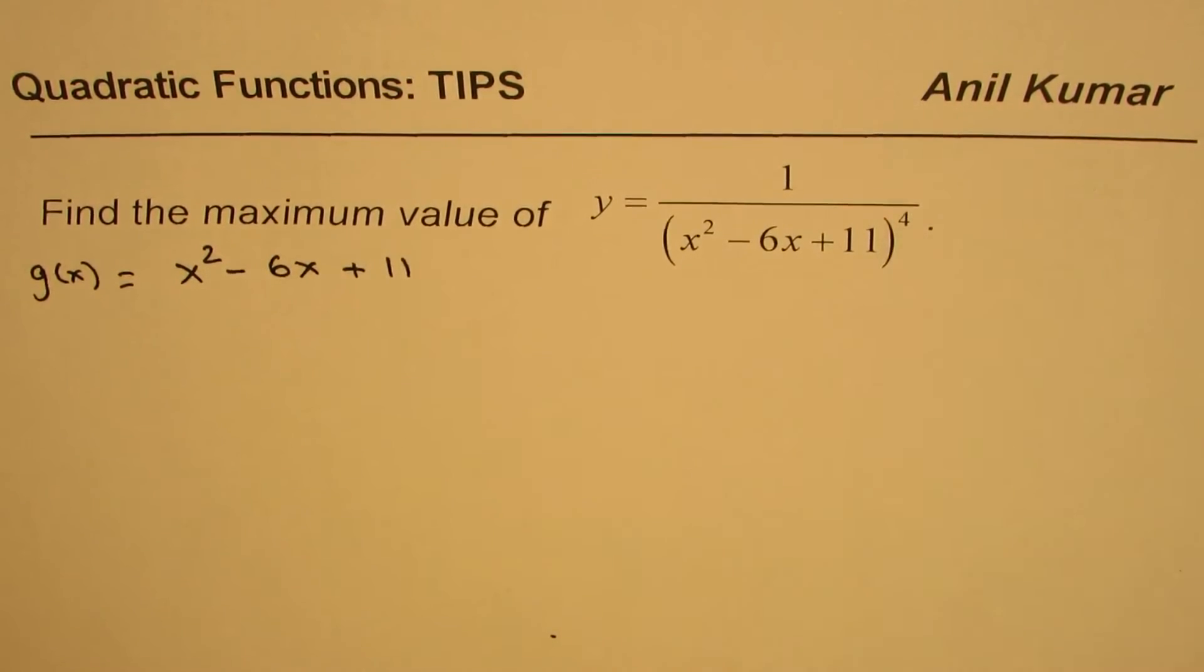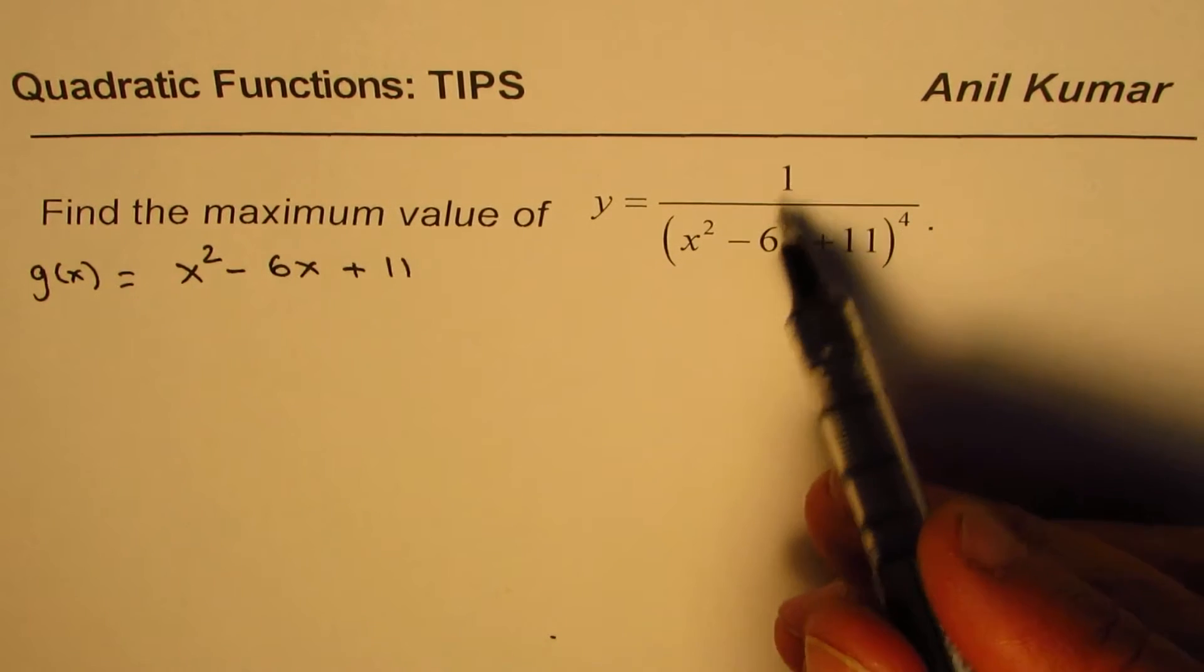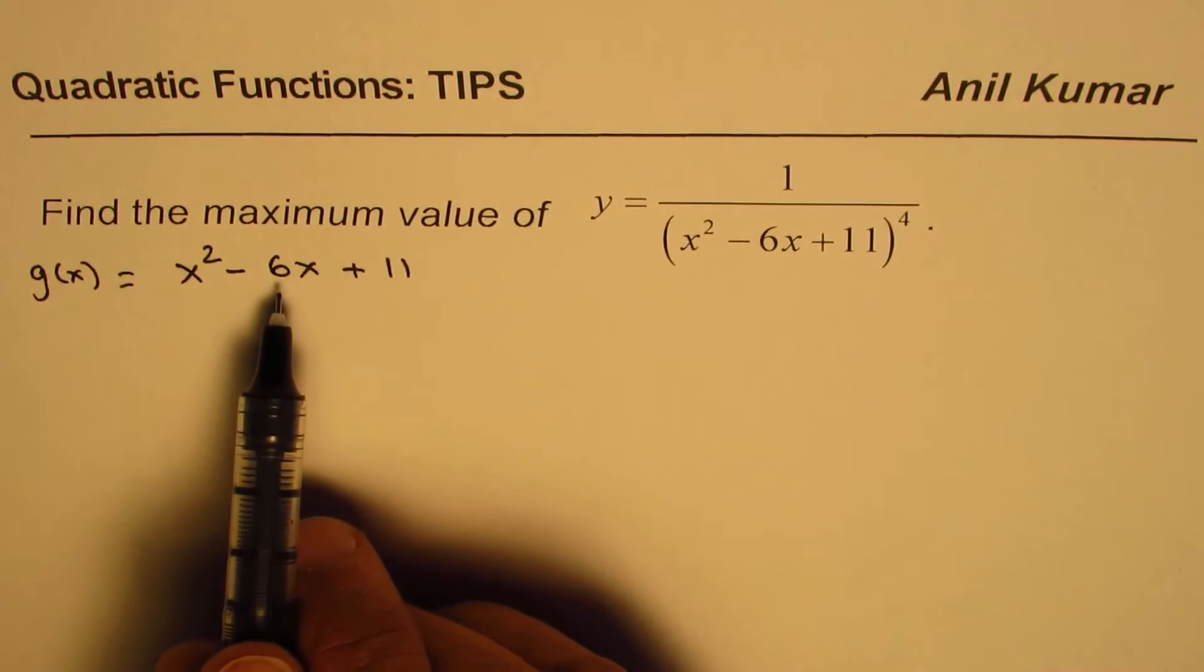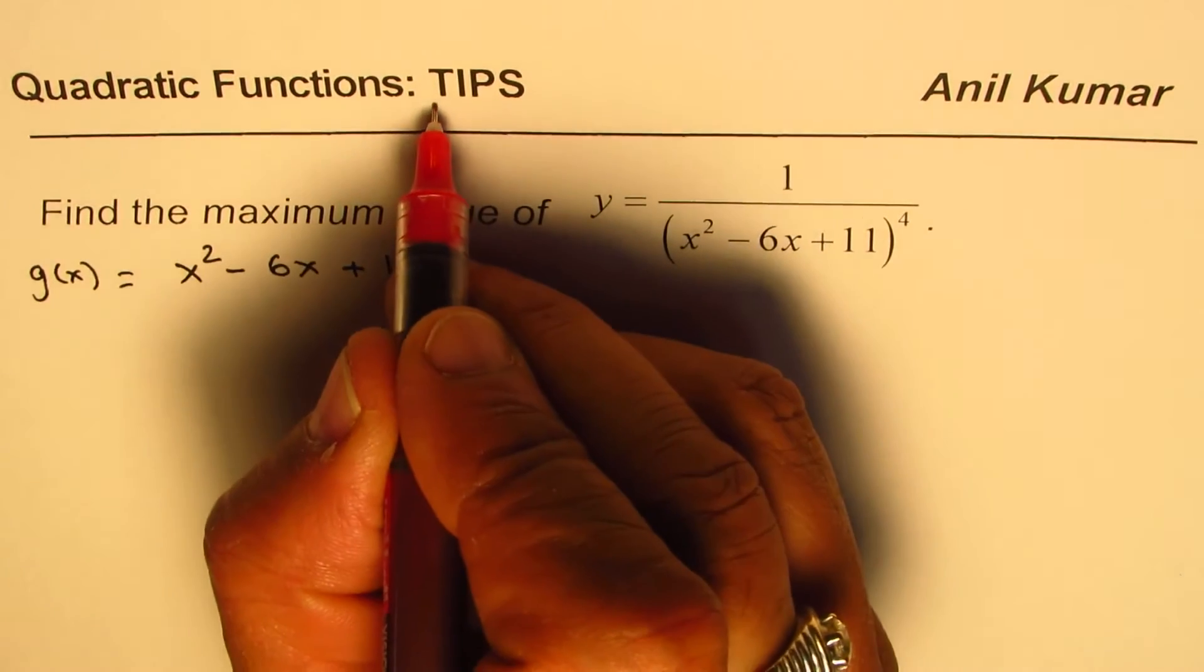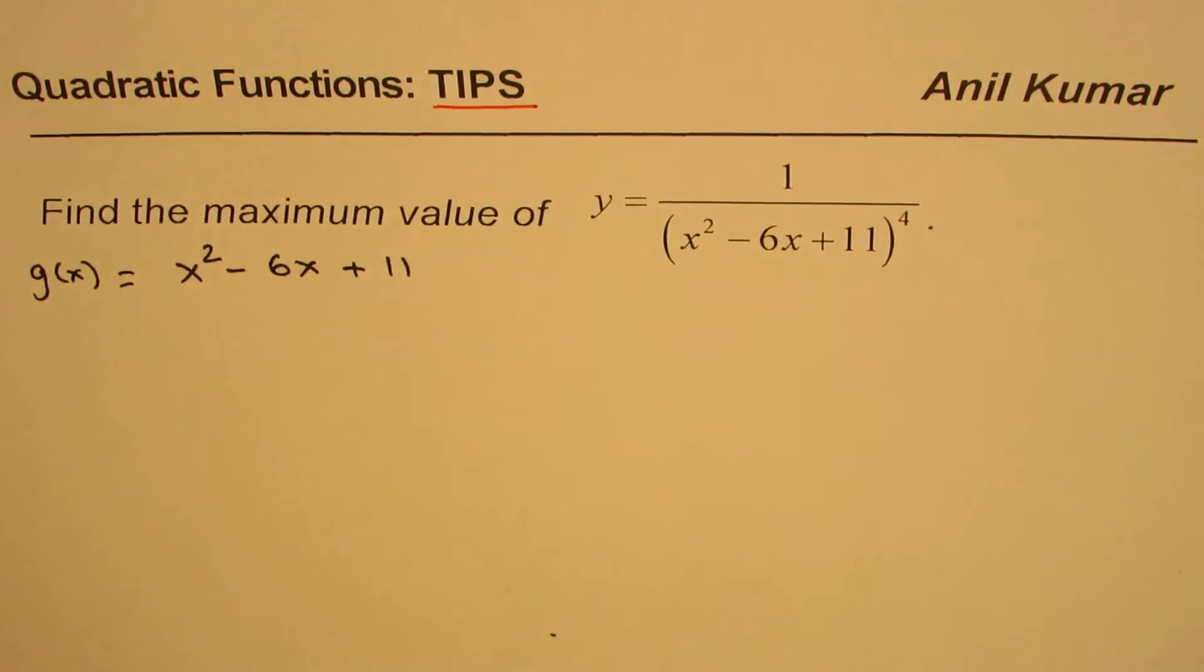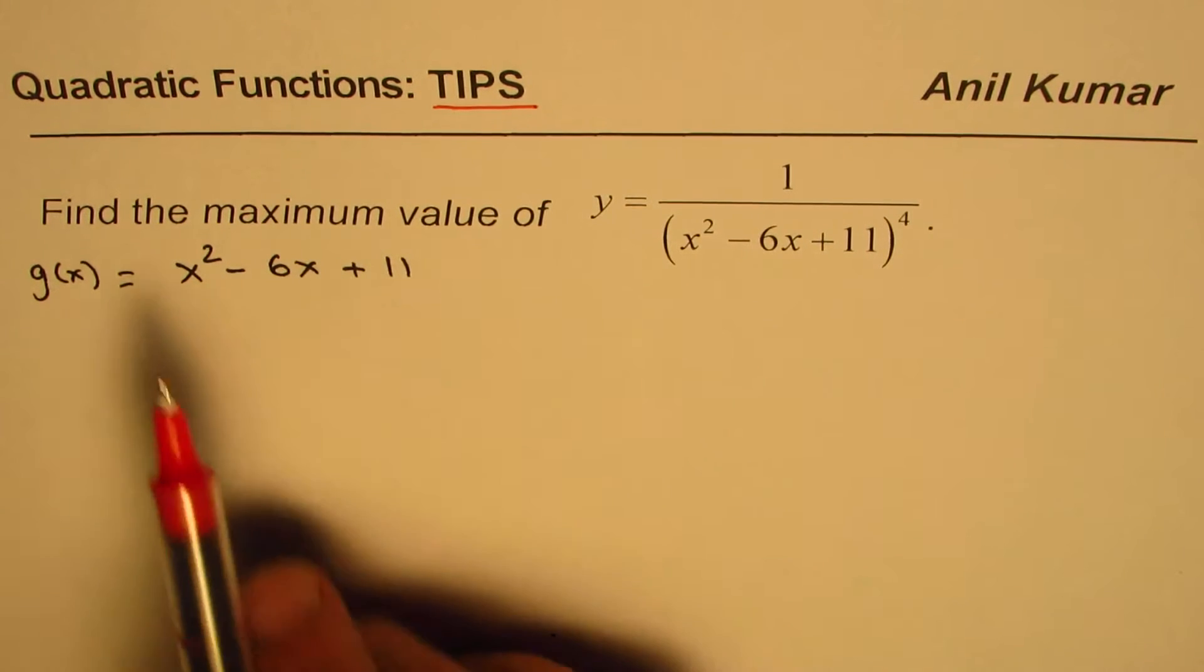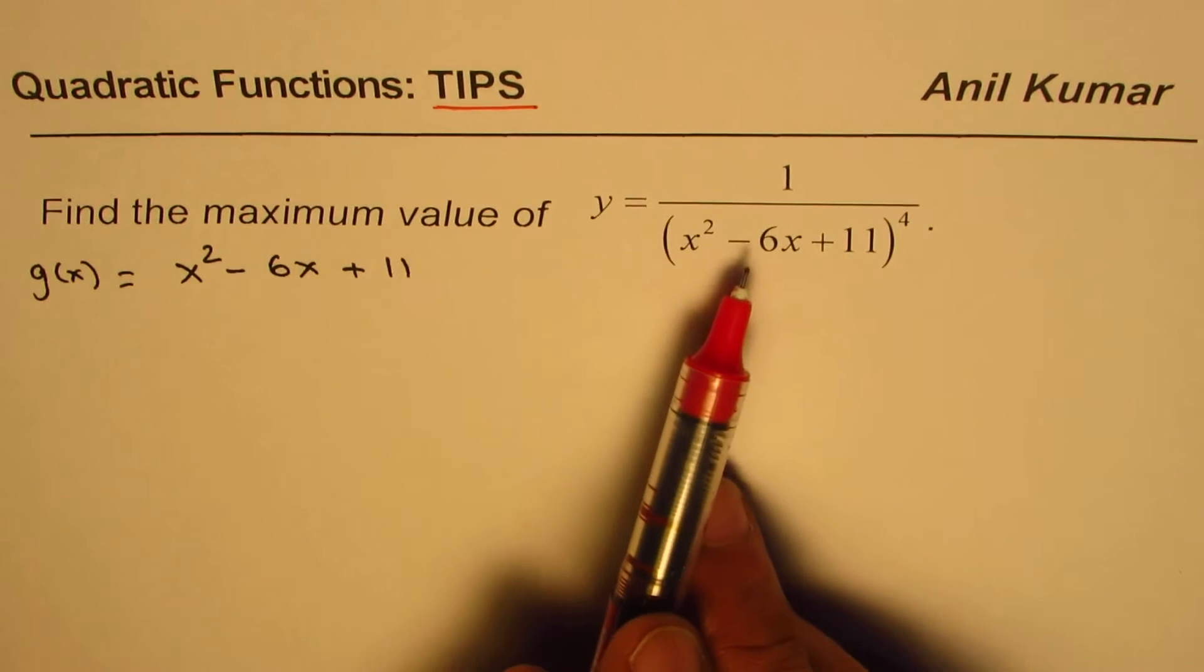We have it to the power of 4. You could consider this to be reciprocal of the quadratic function with exponent of 4. So, that is the complication and that is why it is one of the thinking questions in my list of videos. I hope that helps to understand. Now, when we say maximum value of this,